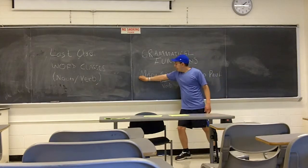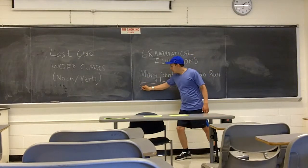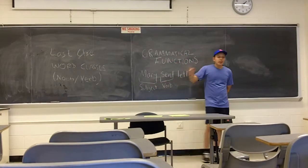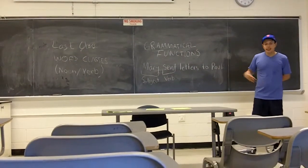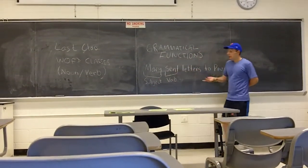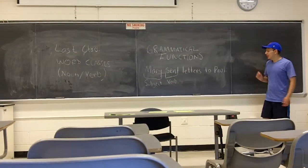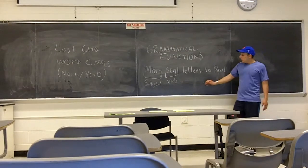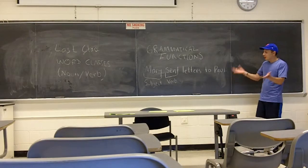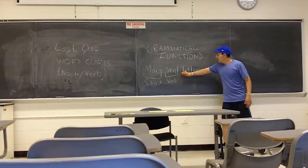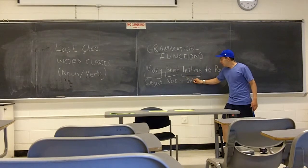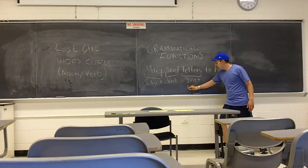We have the verb. We also have the subject — that is another grammatical function. The subject is the one that does the verb; it's the doer of the action, the one that carries out the action of sending. So Mary is the one sending, so she is the subject. We also have the thing that is being done — letters are the ones being sent, so we will call letters the direct object.